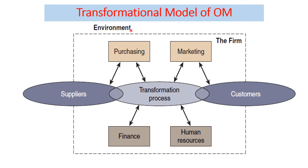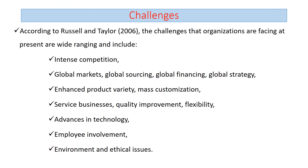This is the transformational model of operation management. This represents the organization or firm, and the operation department is found at the center. It links with customers through marketing, and it gets resources from suppliers through the purchasing department. It can also interact with the finance and human resource departments to get manpower — that is why we call the operation department a central, internal function.